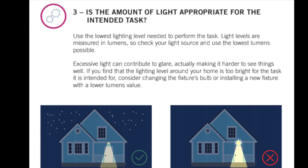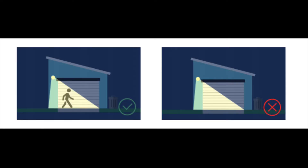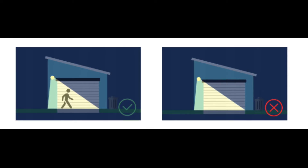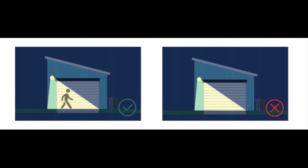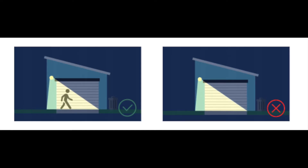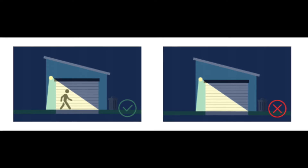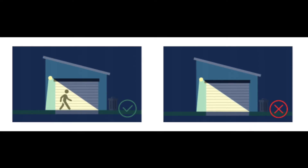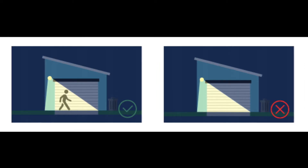Brightness also affects our production of melatonin, so it is really important to select the right level of lighting. Light levels are measured in units of lumens, and we want the lowest lumen level appropriate for its use. Principle four — Controlled: light should be used only when it is useful. Use controls such as timers or motion detectors to ensure that light is available when needed. Dim when possible and turn off when not needed. When light sources are not being used, they should be turned off.